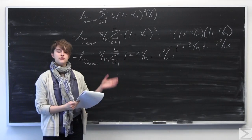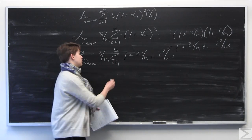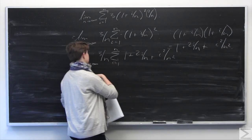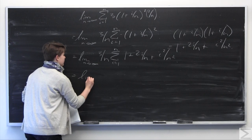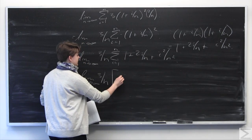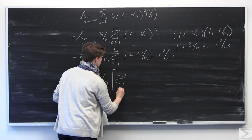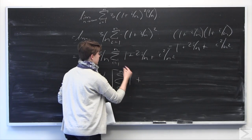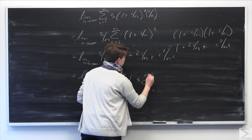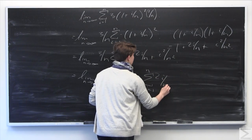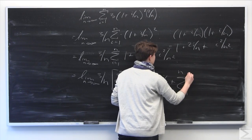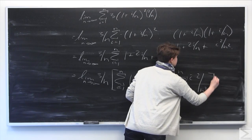I'm going to use the linearity properties of the summation to break this into three sums. So we have limit as n goes to infinity of 3 over n times: the sum from i equals 1 to n of 1, plus the sum from i equals 1 to n of 2i over n, plus the sum from i equals 1 to n of i squared over n squared.